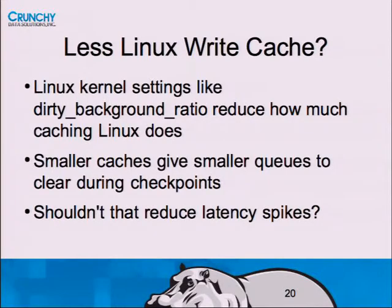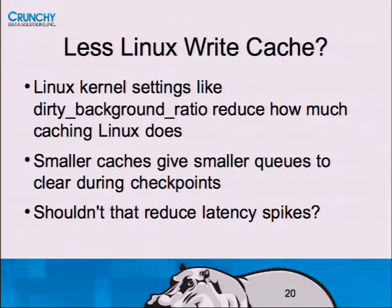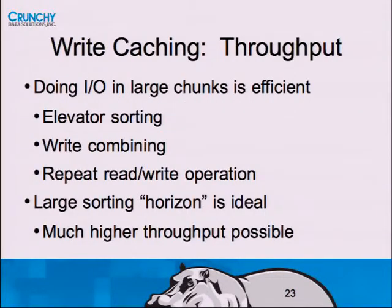One thing you might think to fix this two-and-a-half-second gap is to change how big the Linux write cache is. Linux write cache parameters have names like dirty_background_ratio, and a lot of people think 'let me just shrink that.' That doesn't actually work out. The problem is: if you decrease the size of a cache, it makes it less efficient. The bigger your cache is, the more room it has to make things more efficient. When you reduce cache size, it doesn't necessarily make things faster because small caches also have lower throughput.